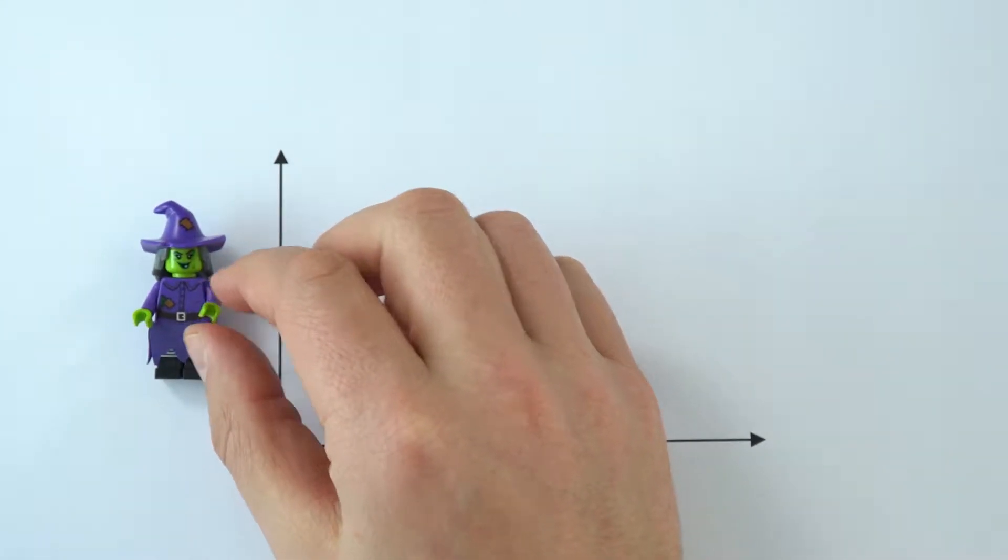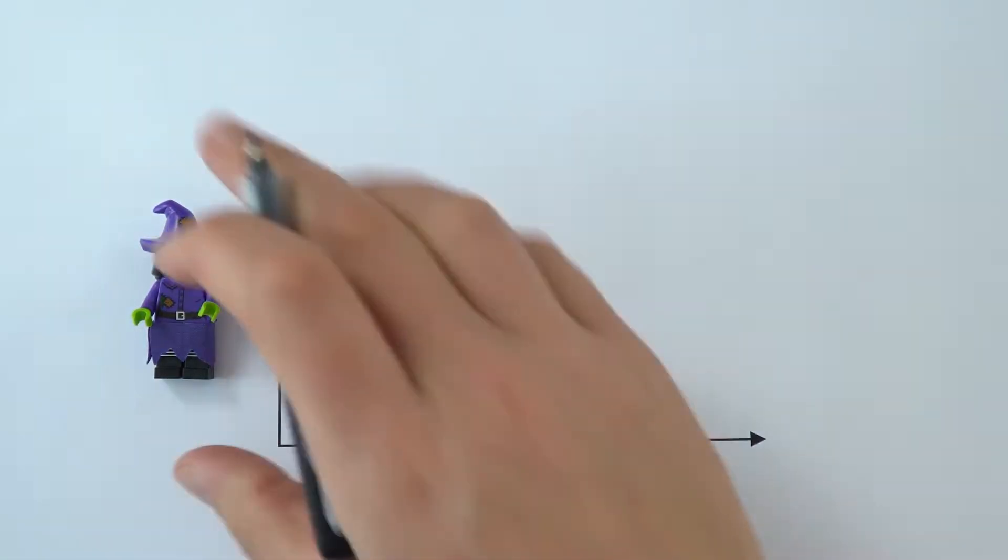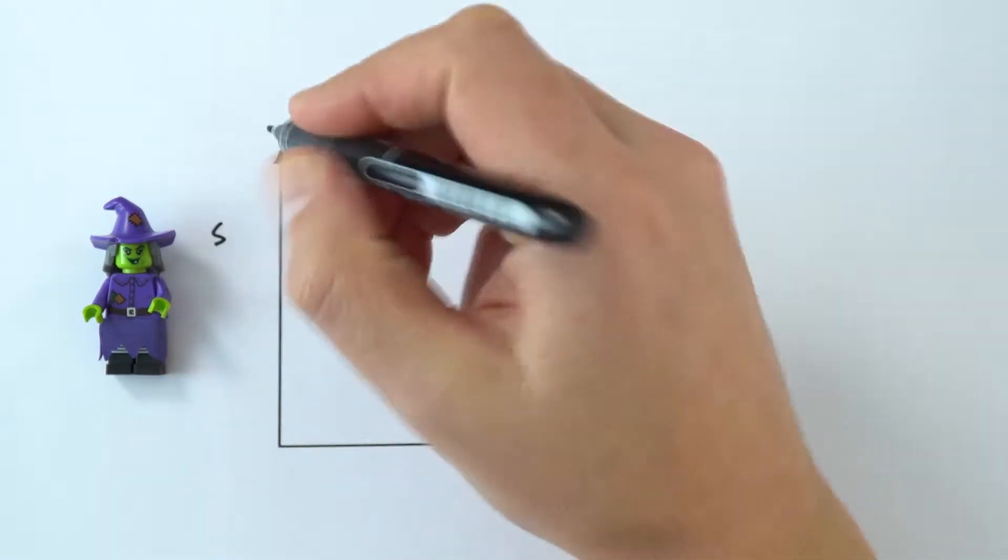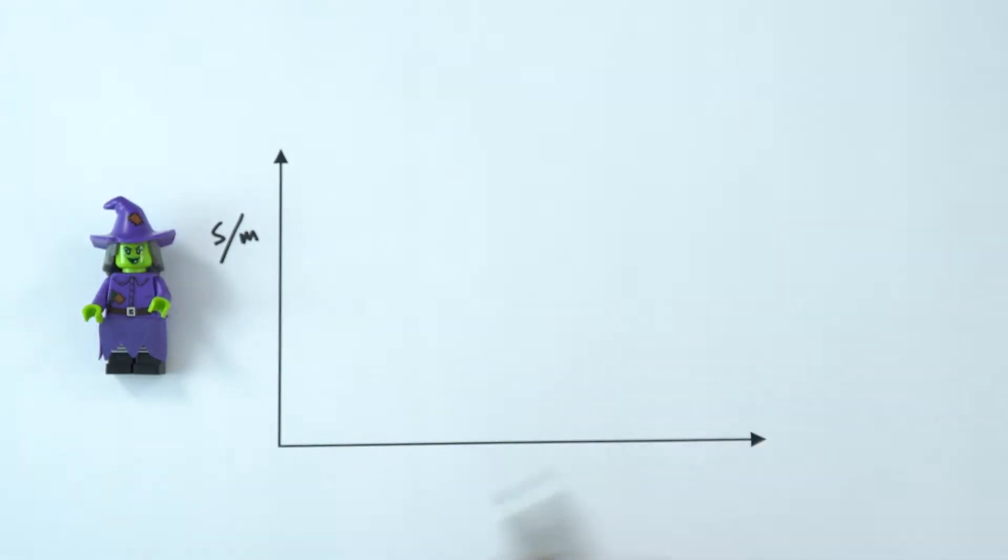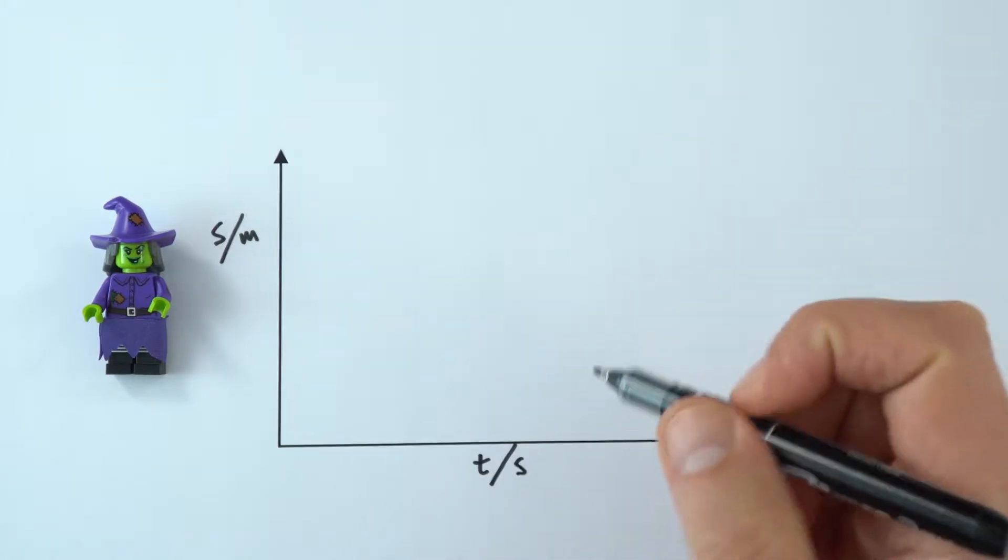Perhaps we wanted to track the movements of somebody over a certain period of time. What we could actually look at is the distance that they've travelled, and we're going to use the letter S to represent distance that's measured in metres. And then along the bottom, because we're going to look at how that varies over time, we're going to have time in this case measured in seconds.